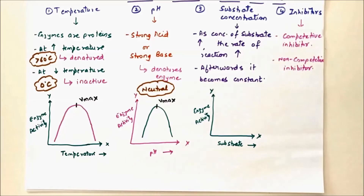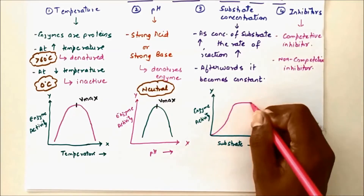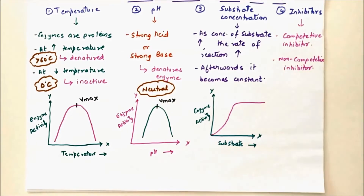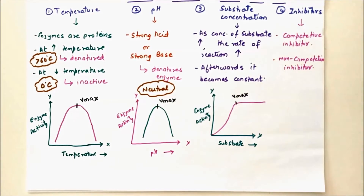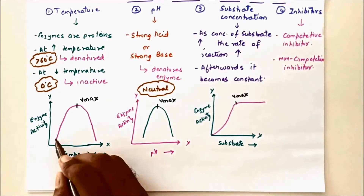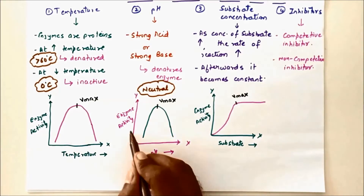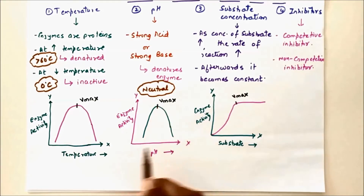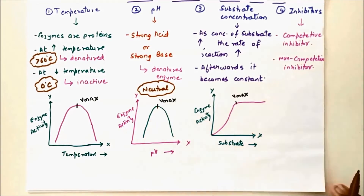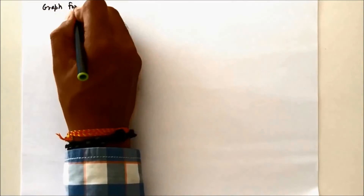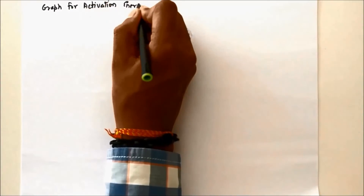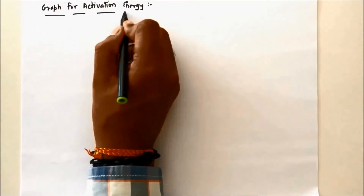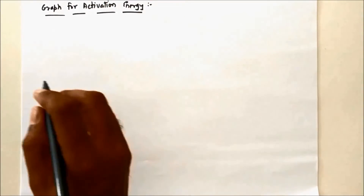With respect to substrate concentration on the X-axis, after Vmax the enzyme activity becomes constant. Even if you increase the substrate, the enzyme activity will not increase further.